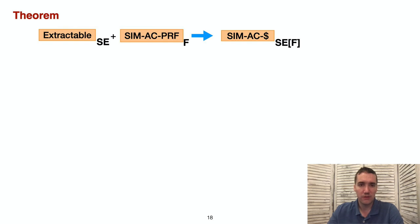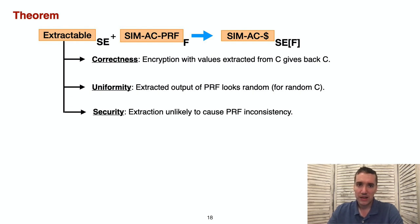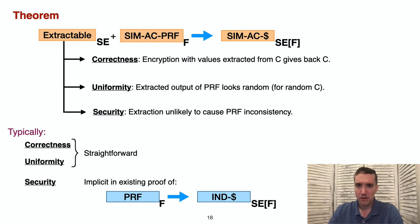Formally, extractability requires three separate properties. A correctness property requiring that encrypting with values which were extracted from some ciphertext C will give back that same ciphertext C. A uniformity property says that if the ciphertext is picked at random, then the extracted PRF outputs should look random. And finally, there's a security property which captures that extraction should be unlikely to give inconsistent outputs for the PRF. Typically, the first two of these properties are straightforward to verify from modes of operations. Security is typically the most interesting property. Fortunately, what we find is that the required analysis is typically already implicit in the existing security proofs for the scheme when using the standard notions of PRF security and dollar sign security.